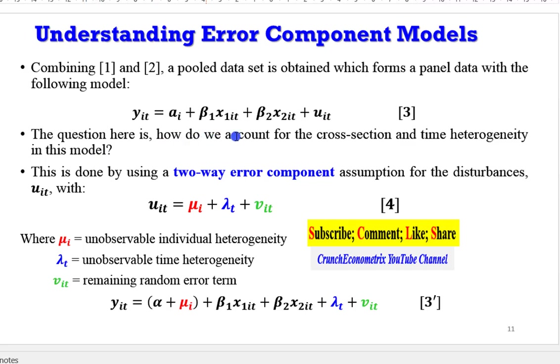Now, the question is, how do we account for the cross-section and time heterogeneity in the model? This can be done by using what is known as a two-way error component assumption for the disturbance term uit, whereby the disturbance term uit is further distributed or divided into sub-components, where you have a component capturing individual differences, a component capturing time differences, and the remaining random error term.